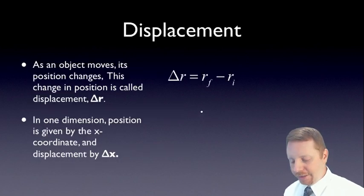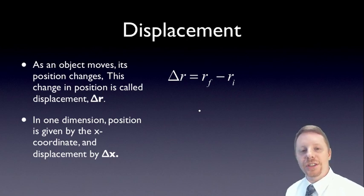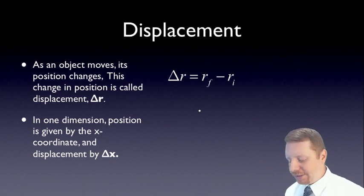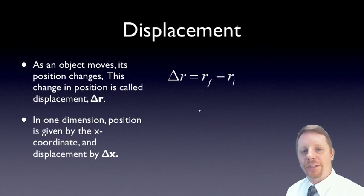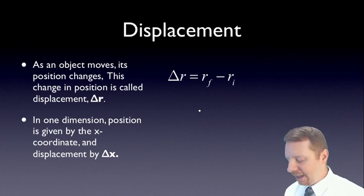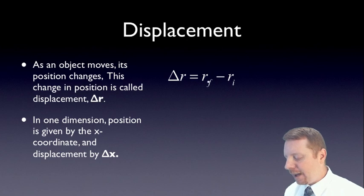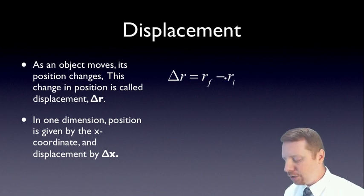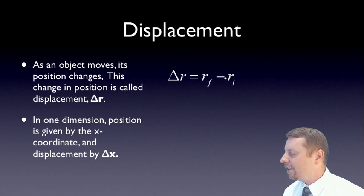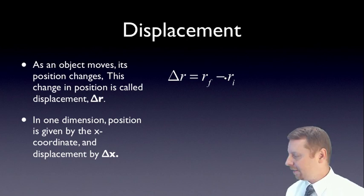Displacement, on the other hand, has to do with a moving object. As an object moves, its position changes. This change in position is known as the displacement vector, delta R or delta S, where delta R is given by the final position of R minus the initial position of R — the final position vector minus the initial position vector. In one dimension, position is given by the x coordinate and displacement would be delta x.